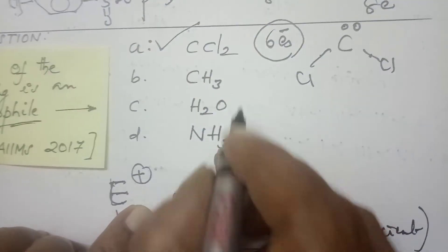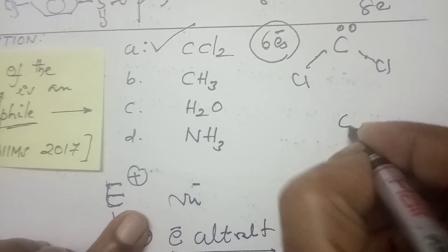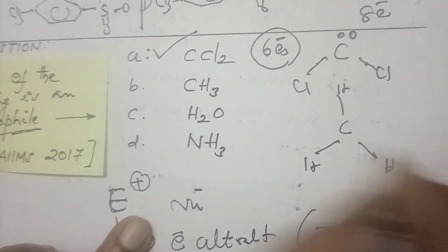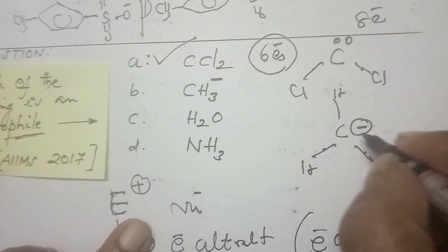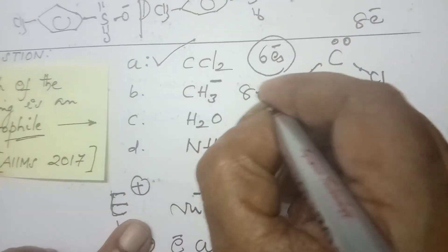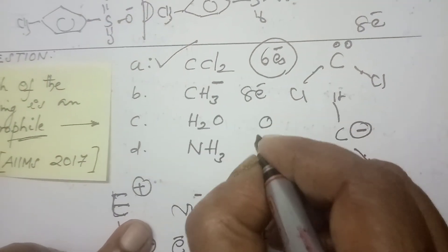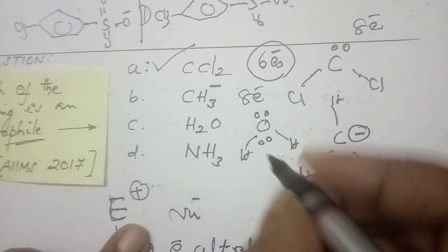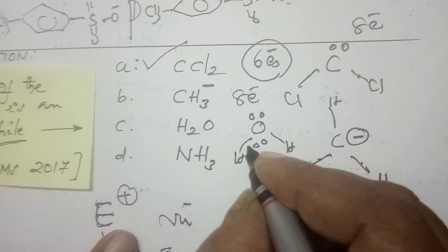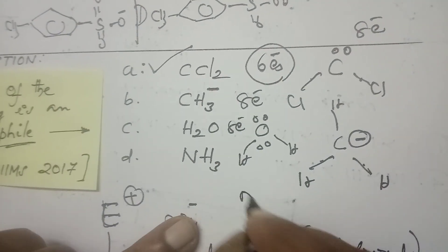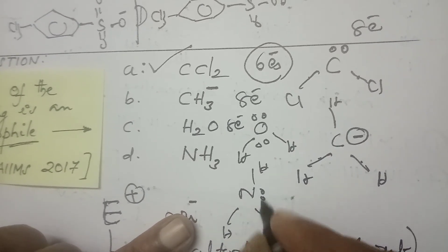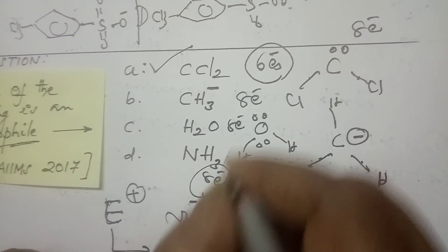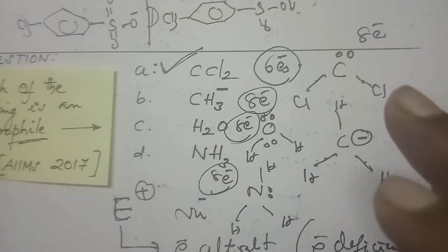We will eliminate the remaining ones. Here CH₃⁻ — with hydrogen, hydrogen, hydrogen and a minus charge — that is a carbanion. 1 + 2 + 3 + 4 bonds, so 4 × 2 = 8 electrons are available. Now the structure of water: on oxygen there are 2 lone pairs — 4 electrons there plus 4 bonding electrons = 8 electrons. Ammonium structure: 3 bonds and 1 lone pair — totally 8 electrons. All are having 8 electrons except CCl₂. So CCl₂ is the electron-deficient species — we can call it the electrophile. Thank you, children.